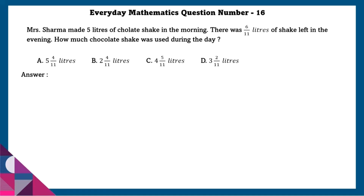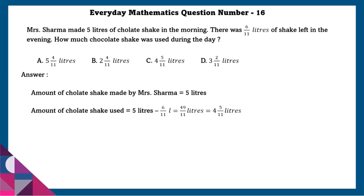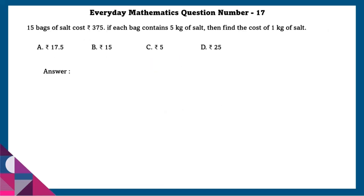Question 16: Mrs. Sharma made 5 liters of chocolate shake in the morning. There was 6/11 liters of shake left in the evening. How much chocolate shake was used during the day? Amount used is equal to 5 liters minus 6/11 liters, that is 4 and 5/11 liters.